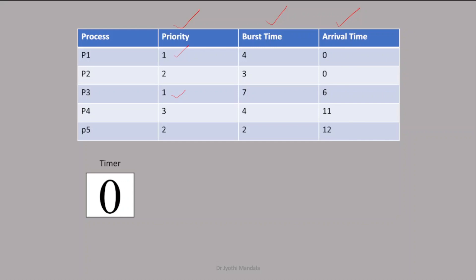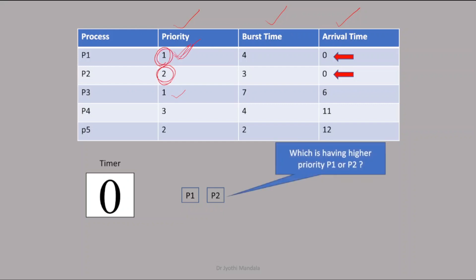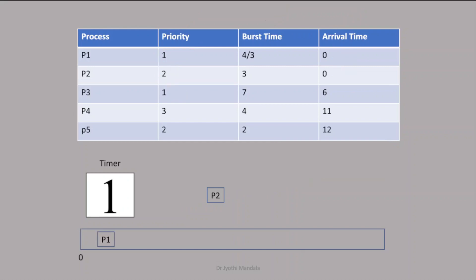Let us start at timer 0. We have got two processes, P1 and P2, and both will be added to the ready queue. The process with the highest priority will be given the chance. As per our terminology, lower the value, highest the priority. P1 has priority 1 and P2 has priority 2, so P1 is having the highest priority and will be given a chance to be executed.